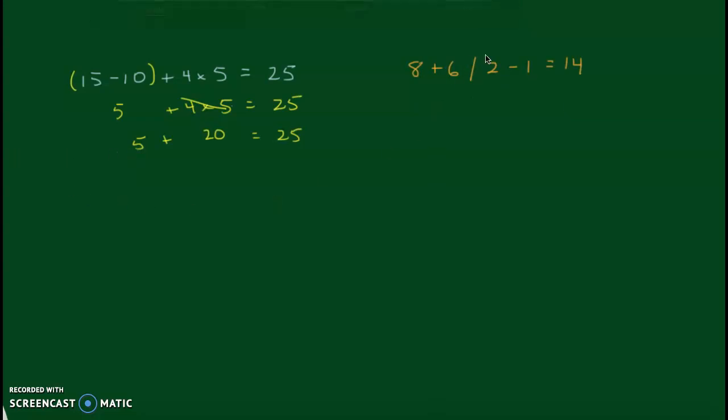So hopefully this one works. So let's start here. In parentheses, I have to do parentheses first. 2 subtract 1 is 1. Then I'll bring down my 8 plus 6 divided by and 6 divided by 1 is 6 because I have to do division first. Then if I bring down my 8 plus 6, 8 plus 6 is 14. So my parentheses here works.